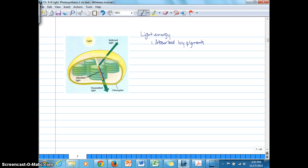If it's not absorbed, then that light energy is transmitted through the leaf, which you can see coming out to the other side, or it is reflected.